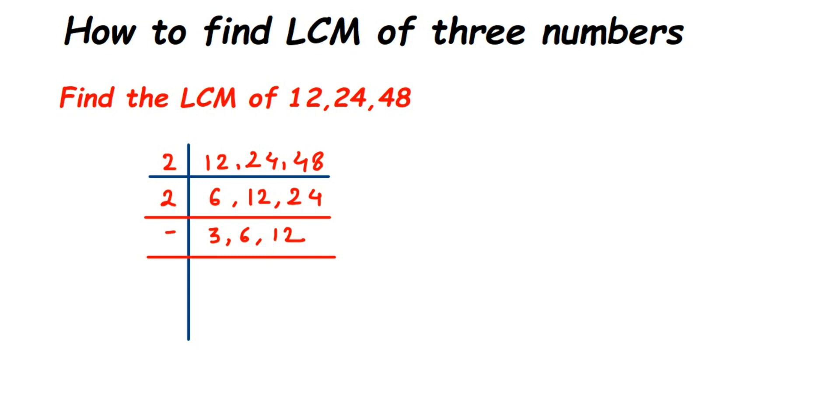So 3 ones are 3, then 3 twos are 6, and then 3 fours are 12. Now again draw a line. Now once we got a 1 here, you can stop. You don't have to divide 1 once again.